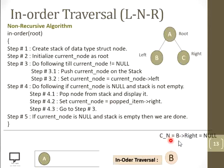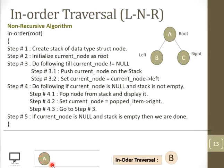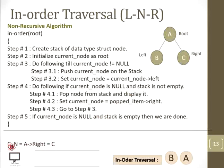Go back to step three — condition is false. Return to step four: current node is null and stack is not empty — both conditions are true. Pop the top of the stack and display it. I pop A and display A. Our next step is to update the current node with the right child of the popped item. A's right child is C, so the updated value in current node is C.